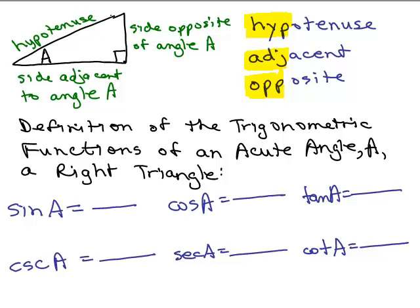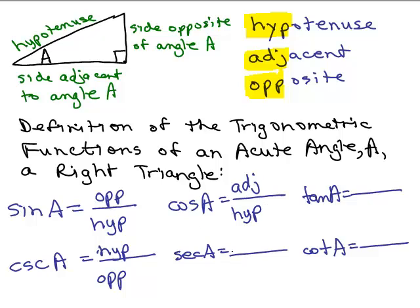There are ratios of these sides that define the six trig functions. The sine of A is the opposite over the hypotenuse. The cosecant is its reciprocal: hypotenuse over opposite. The cosine of A is the adjacent over the hypotenuse. The secant is the reciprocal of cosine: hypotenuse over adjacent. The tangent is the opposite over the adjacent, and the cotangent of A is the adjacent over the opposite.